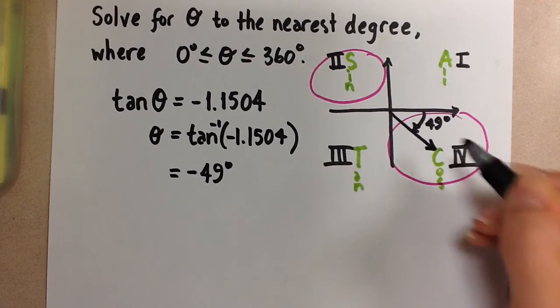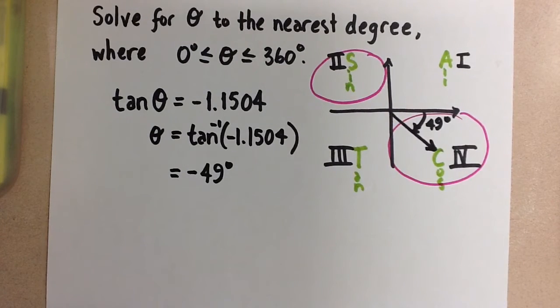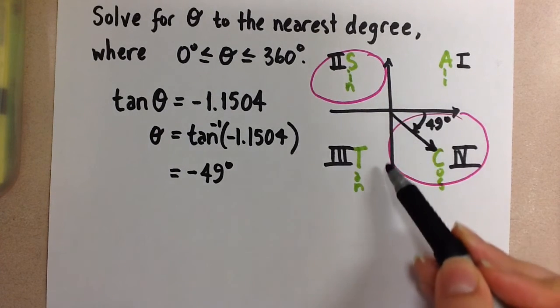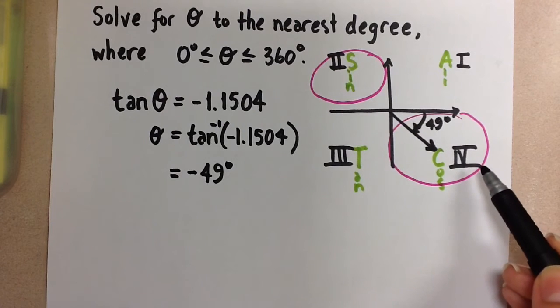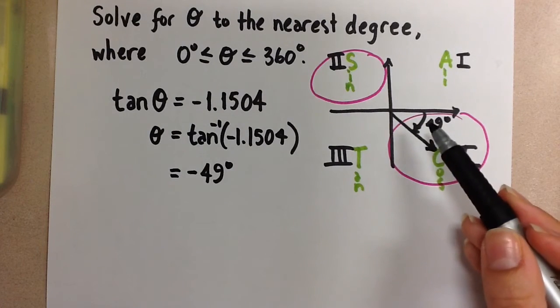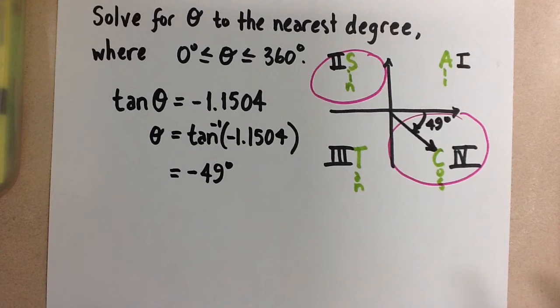So the 49 degrees goes here, and the terminal arm will land right here in this fourth quadrant, which is correct, because we know that the tangent ratio is negative in the fourth quadrant. So there's our first related acute angle there.